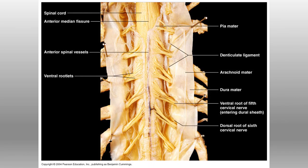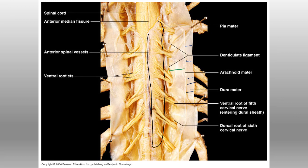Here we can see the different coverings for the meninges: dura mater on the outside, then the arachnoid matter, and then the pia mater covering intimately over the actual cord itself. The pia mater has special extensions called denticulate ligaments that help anchor the cord side to side, extending all the way out to the vertebral bone and actually anchoring the cord within the vertebrae.